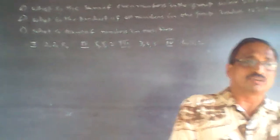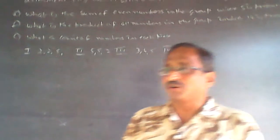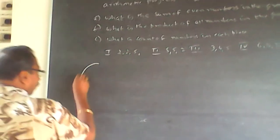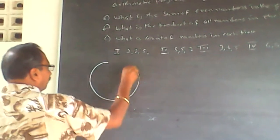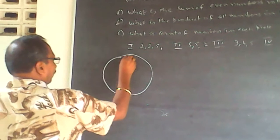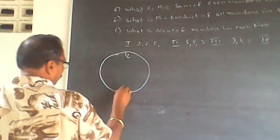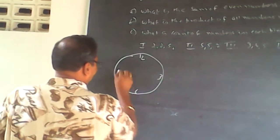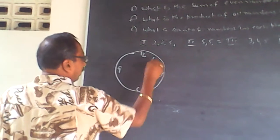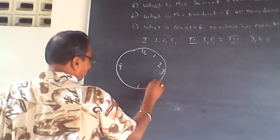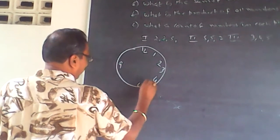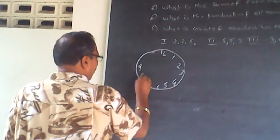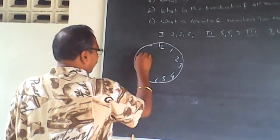They are talking about a conventional clock with numbers 1 to 12. A clock will always be like this: 12 at the top, then 6, 3, 9, 1, 2, 4, 5, 7, 8, 10, and 11 arranged around the face.